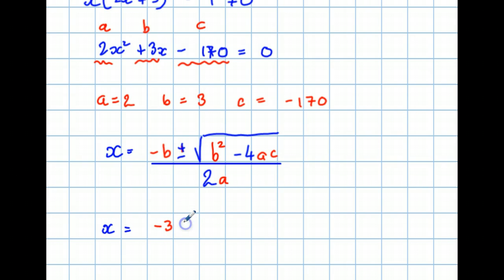plus or minus the square root of 3 squared, take away 4, times 2, times minus 170.